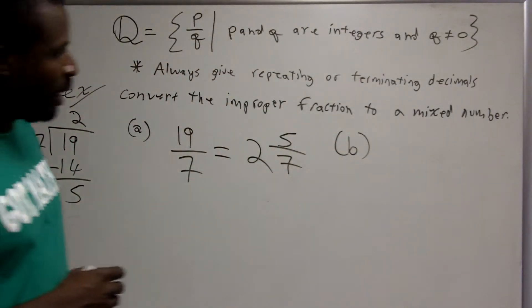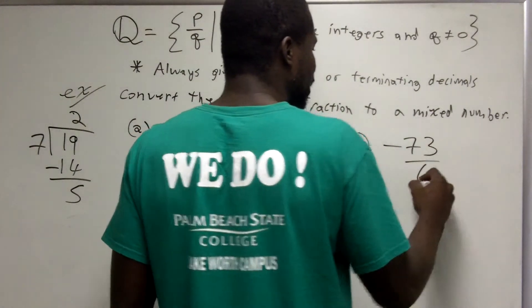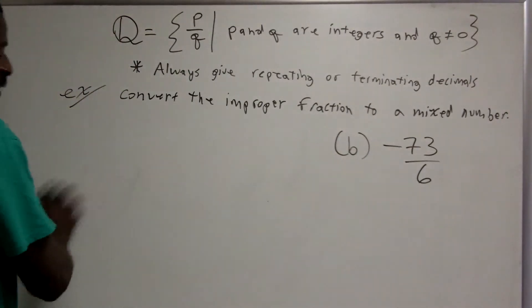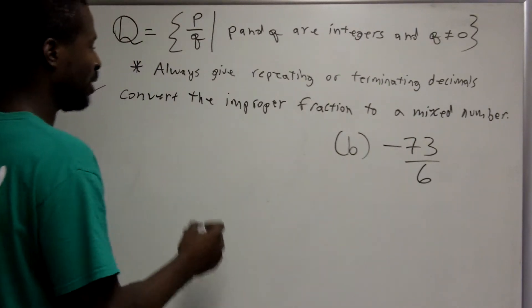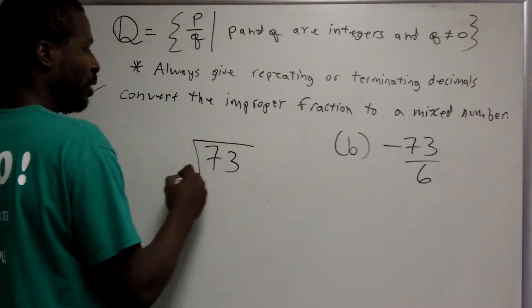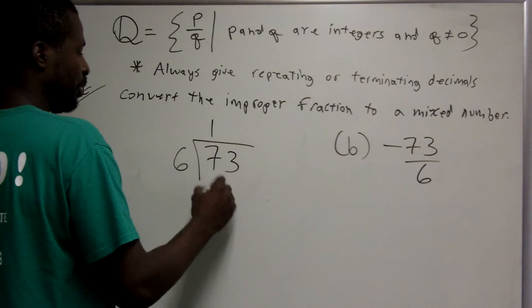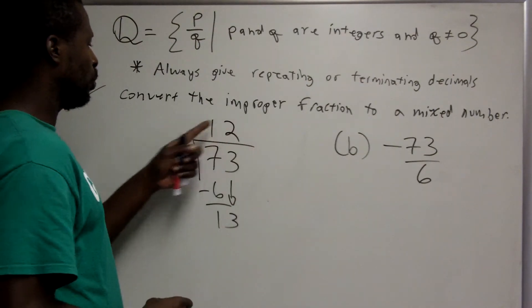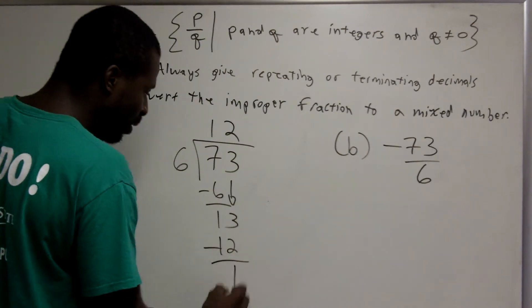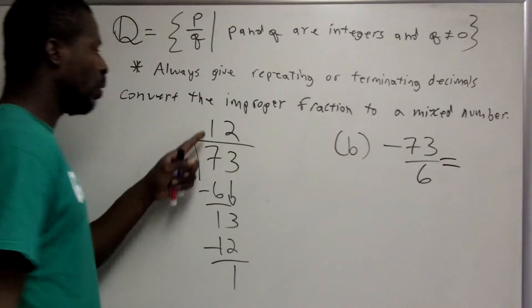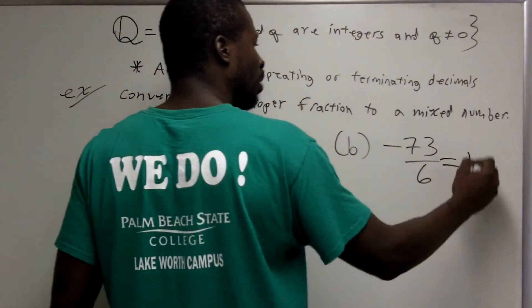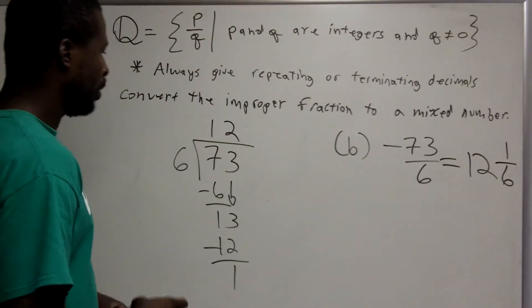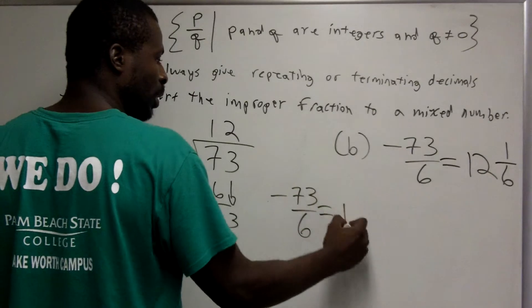Let's do the same thing for negative 73 over 6. The only thing affected by the negative is that the answer will be negative. We take 73 and divide it by 6. 6 goes into 7 once, subtract to get 1, bring down the 3, and 6 goes into 13 twice. 2 times 6 gives 12, subtract, and the remainder is 1. So 6 goes into 73 twelve whole times with 1 left over, giving us 1 sixth. Therefore, negative 73 over 6 equals negative 12 and 1 sixth.